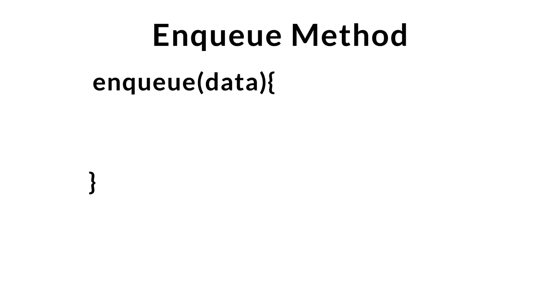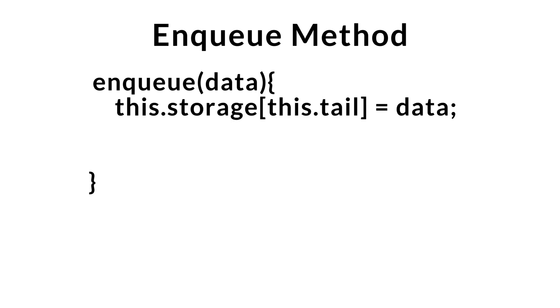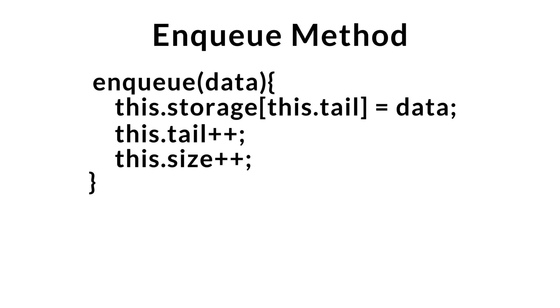Let's go over our NQ method. Our NQ method has one parameter of data, which is what we're going to be inserting at the back of the queue. Our tail should be at the index where we need to insert, since we are always adding to the back. So we'll store the data at the position of our tail index. Next, we advance our tail index to the new position for the next insert. Finally, we increment our size property since we successfully inserted the data.